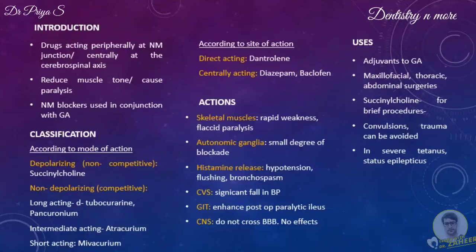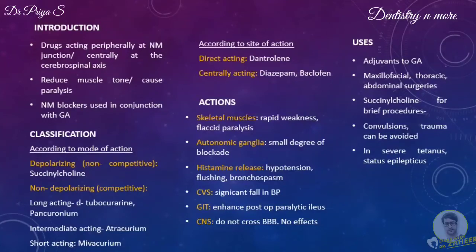Non-depolarizing or competitive muscle relaxants act as competitive antagonists. They bind to the ACh receptors but are unable to induce ion channel openings. Examples include tubocurarine and pancuronium, which are long-acting muscle relaxants. Intermediate-acting muscle relaxants include atracurium, and mivacurium is a short-acting non-depolarizing muscle relaxant.